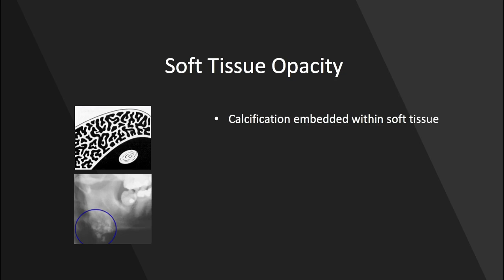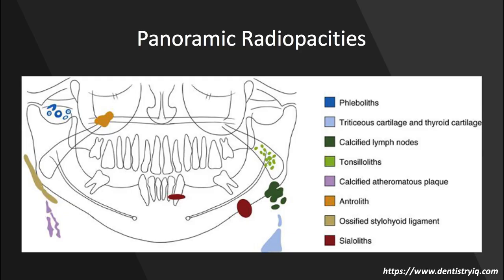And then we have the soft tissue opacity — this refers to a calcification that's embedded within the soft tissue, not within the hard tissue or bone of the jaws. This is a great diagram to reference for soft tissue calcifications as viewed in a panoramic. It can be incredibly helpful when you see a radiopacity that seems out of place or abnormal and appears in a very specific location in the pan.